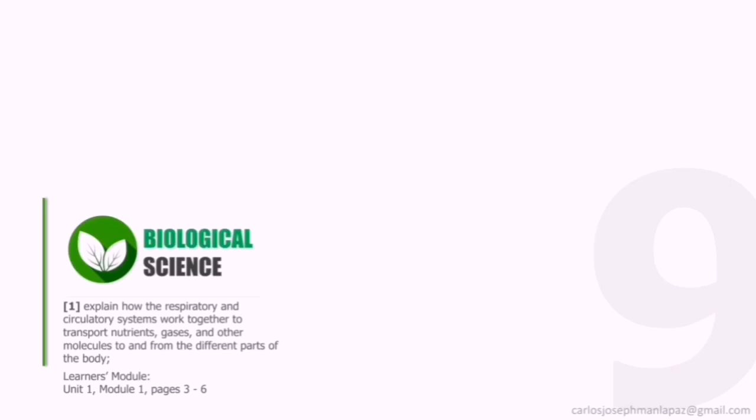Hello, this is Grade 9 Biological Science. For this first video, you are going to be studying the following learning competency: explain how the respiratory and circulatory systems work together to transport nutrients, gases, and other molecules to and from the different parts of the body. You will be needing your learner's module, Unit 1, Module 1, pages 3 to 6.